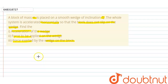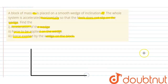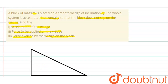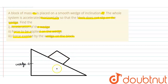A block of mass m is placed on a smooth wedge of inclination. First we need to consider one inclined plane, and on that inclined plane we place a block of mass m. Here we are drawing the wedge — this is the inclined wedge — and this is the block of mass m. The entire system is moving with acceleration a.